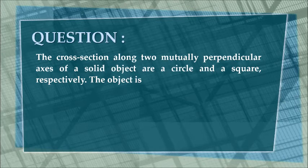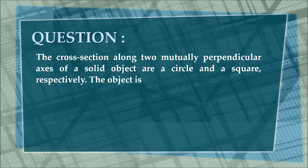Question. The cross section along two mutually perpendicular axes of a solid object are a circle and a square respectively.